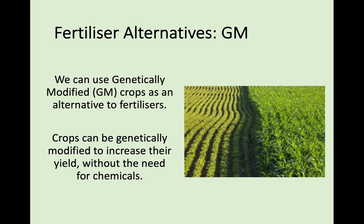Another alternative to fertilisers goes back to genetic modification. In this picture you can see two versions of one crop: on the left non-GM, on the right genetically modified. Crops can be genetically modified to increase their yield without a need for chemicals. For example, a potato plant that normally produces eight potatoes could be modified to produce twenty. Over time this massively increases crop yield, making GM another alternative to using fertilisers.